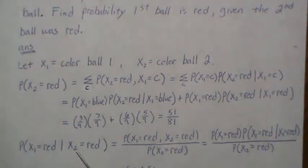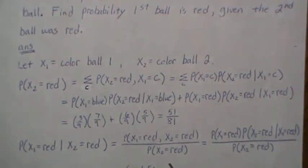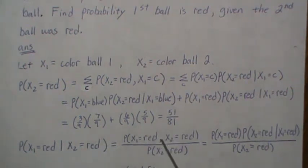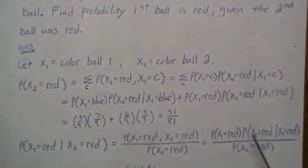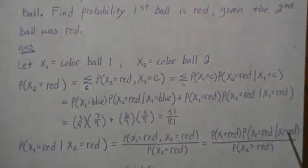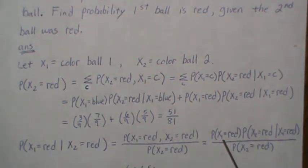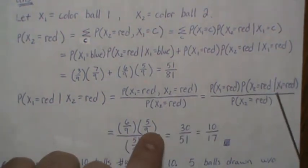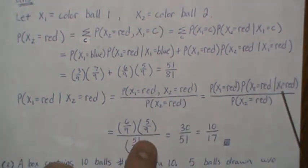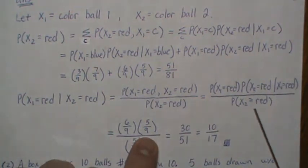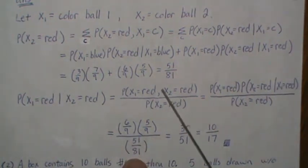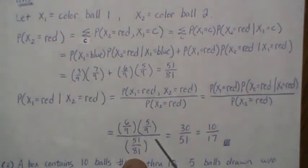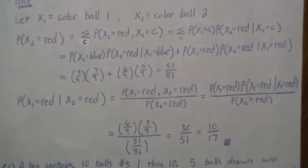Then the conditional probability — the probability that the first one is red given the second one was red — can be written and expanded in conditional probability form. The probability of a red on the first ball is 6/9, the probability of red on the second given the first is red is 5/9, and the probability of drawing a red is 51/81. This simplifies to 10 over 17.